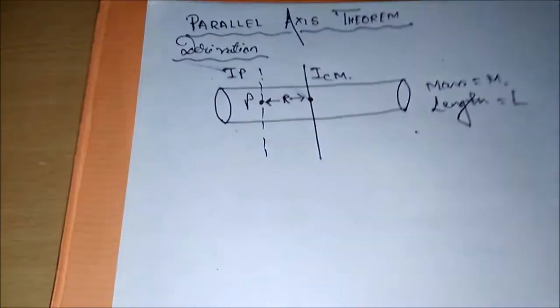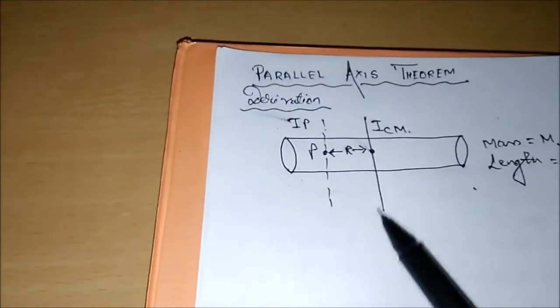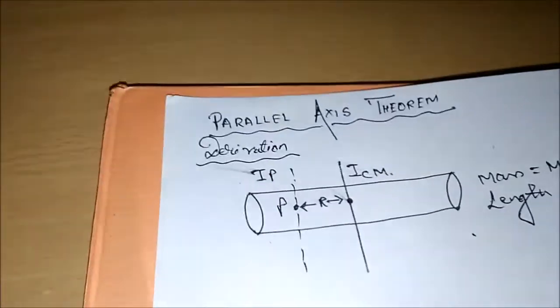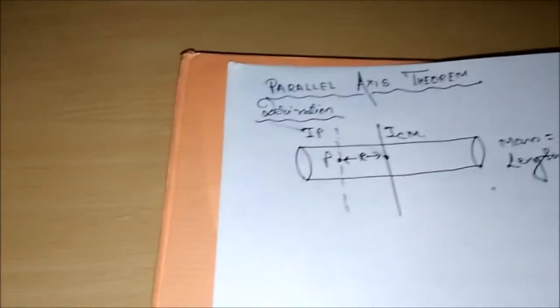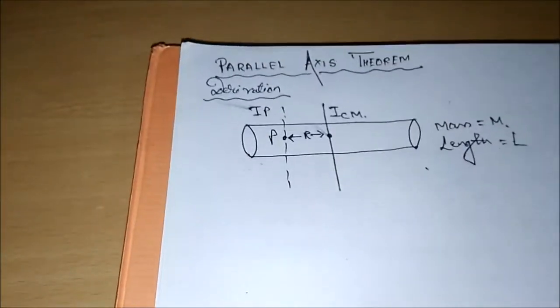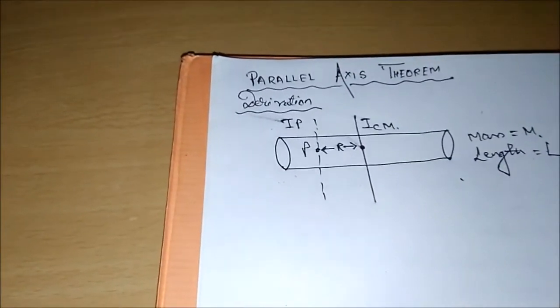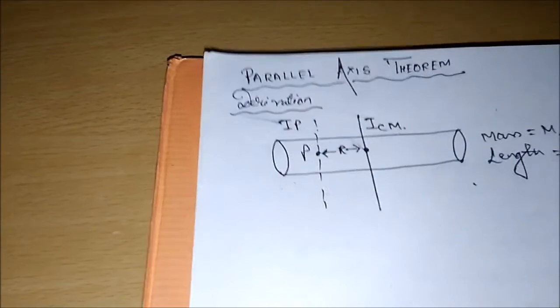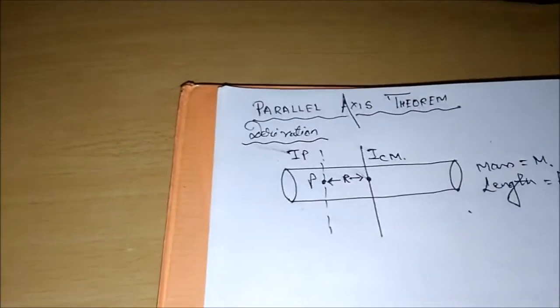Let's say that the entire length is L. And let's say that Icm here is the center of mass of the entire bar or cylinder. Now we are supposed to find the moment of inertia at point P of this entire bar.